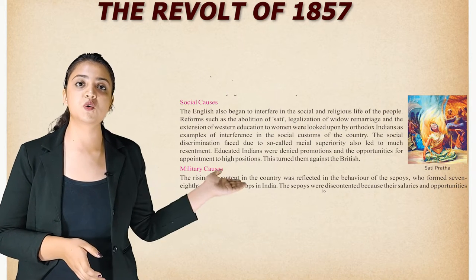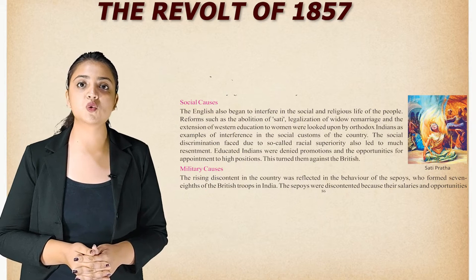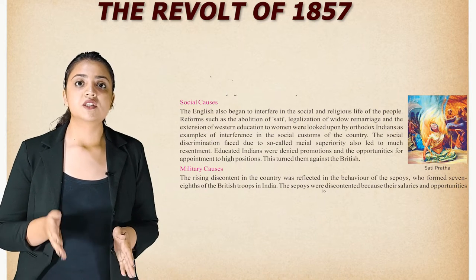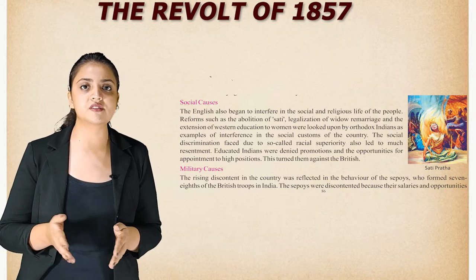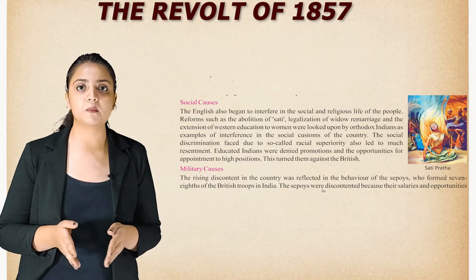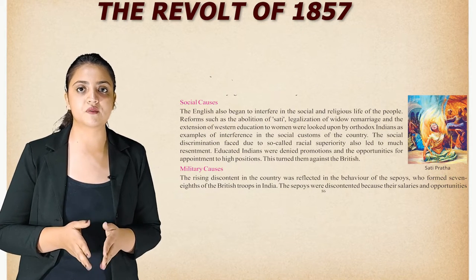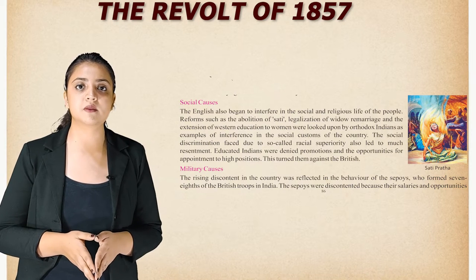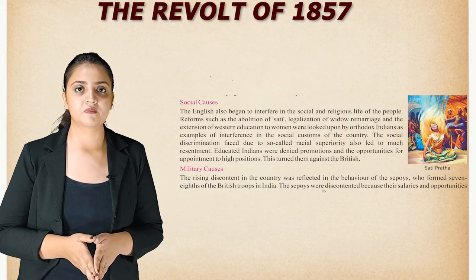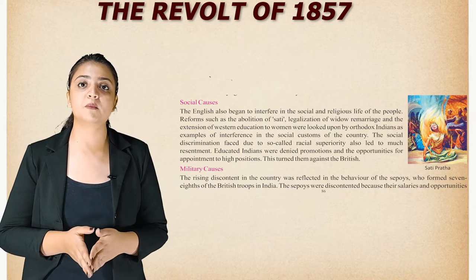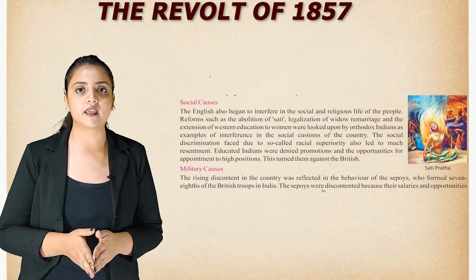Regarding social causes, the English began to interfere in the social and religious life of the people. Reforms such as the abolition of sati, legalization of widow remarriage, and the extension of western education to women were looked upon by orthodox Indians as interference in the social customs of the country. The social discrimination due to so-called racial superiority also led to much resentment. Educated Indians were denied promotions and opportunities for appointment to high positions, which turned them against the British.